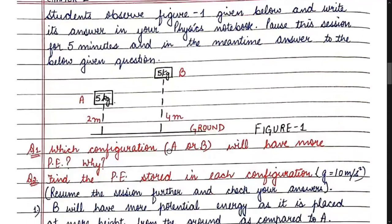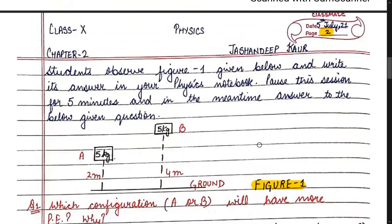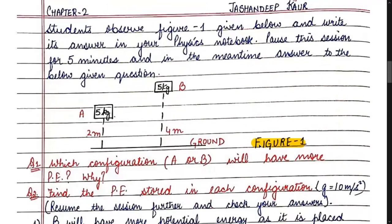Referring to figure number one on page two of the PDF: two objects A and B, both of mass 5 kg. A is placed at a height of 2 metres, while B is at 4 metres. Pause the video, write the answers in your physics notebook, then resume to check your answers.